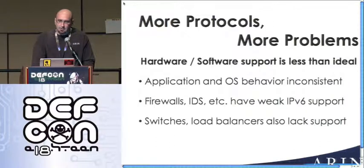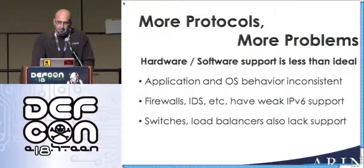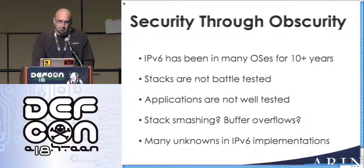Probably the best thing to do is have really strict rules that drop all anomalous traffic and look through your logs to sort it out later. One area that is actually really good is routers. If you have a Cisco or a Juniper, it supports V6, and there's almost complete feature parity between V4 and V6 — which is really, really great.